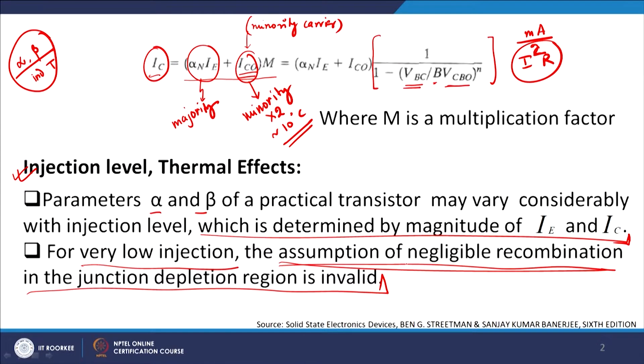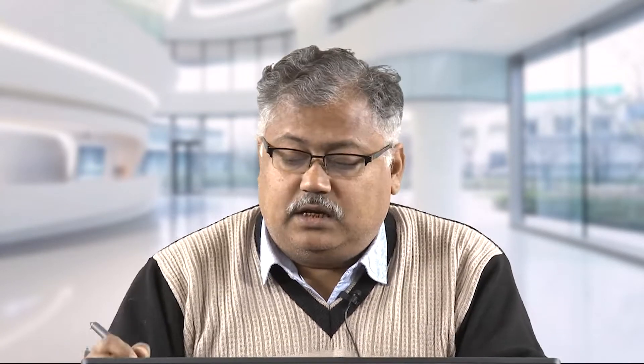The assumption of negligible recombination in the junction depletion region is invalid because we cannot assume that the recombination current is very low — it will be very high compared to the base injection current. Additionally, base conductivity modulation effect results in a decrease in the value of gamma, which is the emitter injection efficiency.